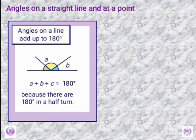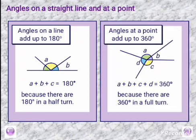Next, angles on a straight line and angles at a point. Angles on a straight line add up to 180 degrees. Angles A, B, C lie on the line, so angle A plus angle B plus angle C equals 180 degrees. Angles at a point add up to 360 degrees, so angle A plus angle B plus angle C plus angle D equals 360 degrees.